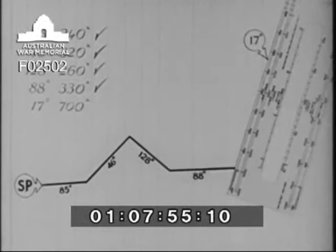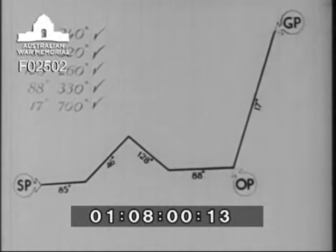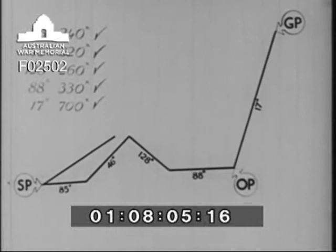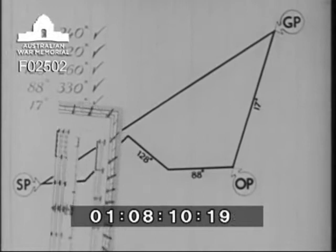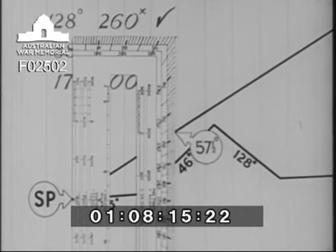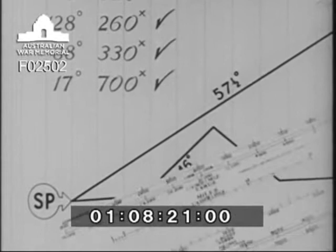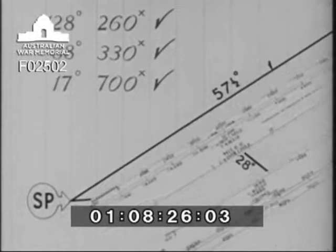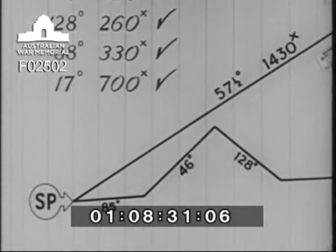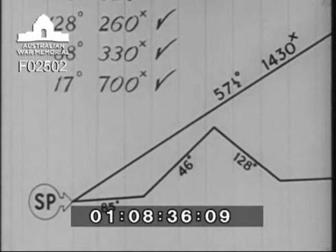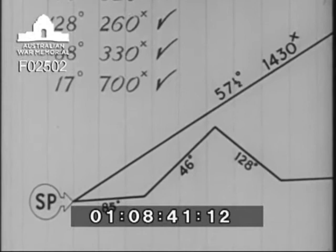This marks the position of the enemy gun. Now he draws a line connecting his starting point to the gun position and measures this bearing with his protractor: it is 57 and a half degrees. He next measures the distance along this line using the same scale: 1430 yards. Now he must convert this compass bearing of 57 and a half degrees into a magnetic bearing. He knows that his compass has an error of one degree east of magnetic north. The magnetic bearing of the enemy gun position is therefore 58 and a half degrees.